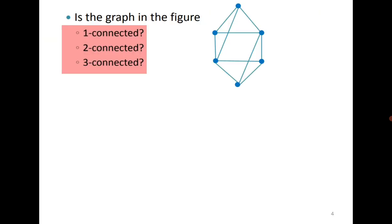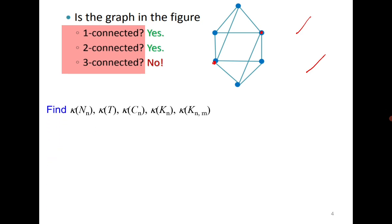Let us consider the same example for which we discussed edge connectivity; please try to find its vertex connectivity. Edge connectivity was 3. Is it 1-connected? Yes, every connected graph is 1-connected. It does not have a cut vertex, so it is 2-connected — if you delete any vertex, the graph remains connected. Is it 3-connected? It means if you delete two vertices, you need to find two vertices whose deletion disconnects the graph. Yes, if I delete these two vertices, the remaining graph becomes disconnected, so it is not 3-connected. Therefore, its vertex connectivity is 2, which is the largest value of K for which it is K-connected.